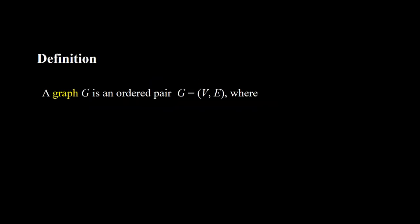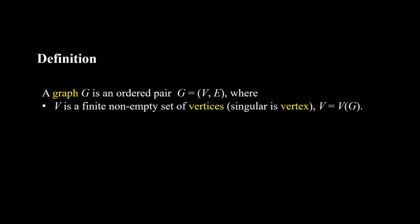Definition. A graph G is an ordered pair G equal to the pair V and E, where V is a finite non-empty set of vertices — the singular is vertex — V equal to V(G), and E is a set of edges, E equals to E(G).